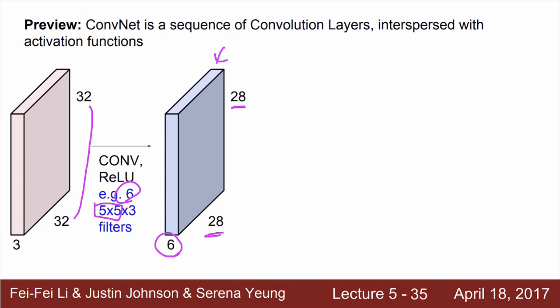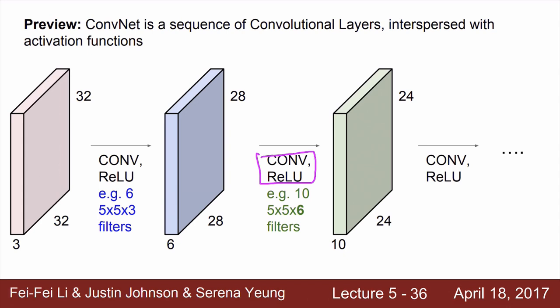Similarly, we can apply another convolution layer with 10 filters. If we use 10 filters, the output depth will be 10. And using a 5 by 5 filter on a 28 by 28 input generates a 24 by 24 activation map.